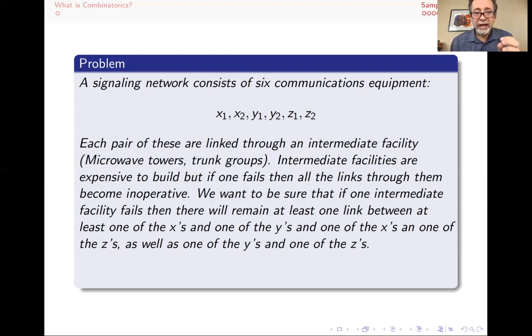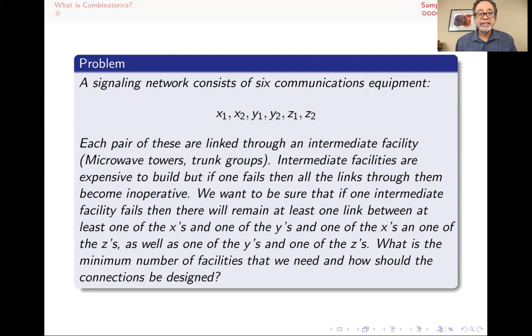So even if one facility fails, we still want these connections to happen. And so our question is: what's the minimum number of facilities that we would need, and how should the connections be designed? Like who should be connected to what through which facility, so that when something fails, those connections do not fail.